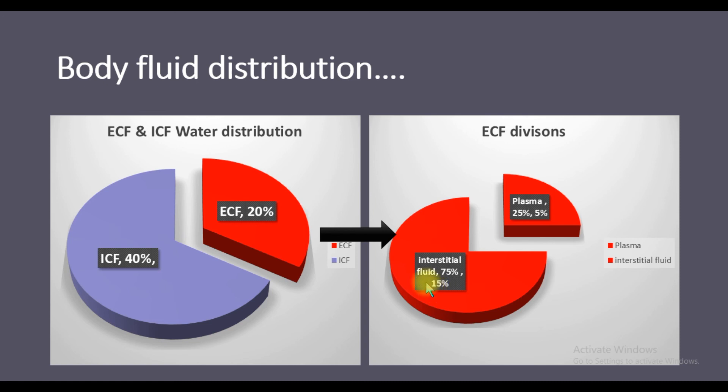This is how body fluid distribution appears inside the body as ICF and ECF. ICF stands for intracellular fluid present inside the cell, whereas ECF is extracellular fluid which includes interstitial fluid and plasma.